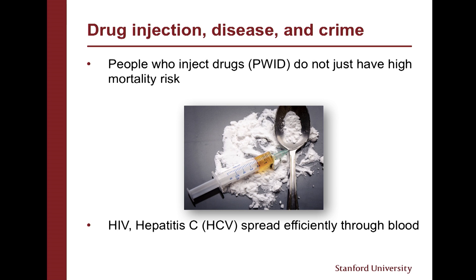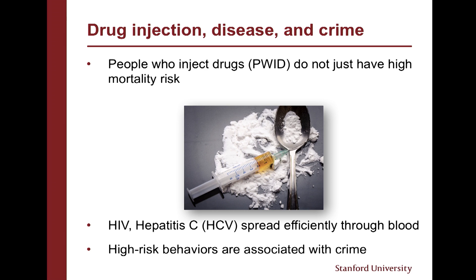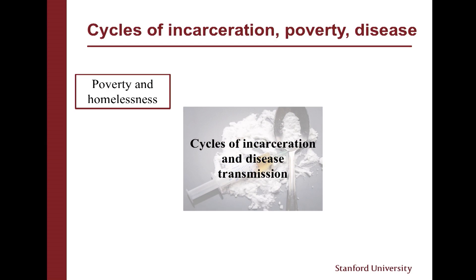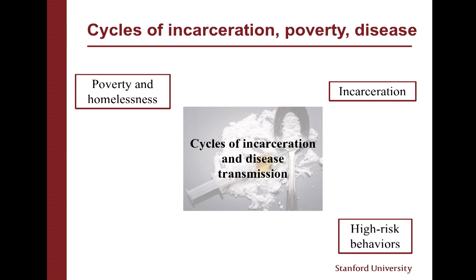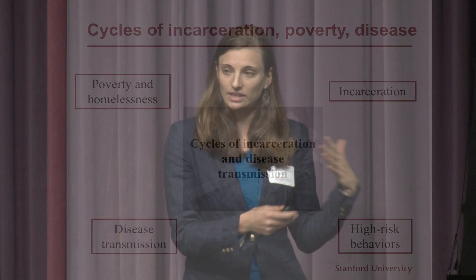People who inject drugs are not just at high risk for mortality — they also have high morbidity risks. Blood-borne illnesses like HIV and hepatitis C spread very efficiently through contact with blood, and therefore there's a high prevalence in injecting communities. A lot of high-risk behaviors associated with injecting are commonly correlated with criminal activity, so many individuals become locked into cycles of incarceration, drug abuse, and disease transmission. There are four driving factors: poverty and homelessness, incarceration, high-risk behaviors, and disease transmission — and all of these are inherently linked and feed into one another.